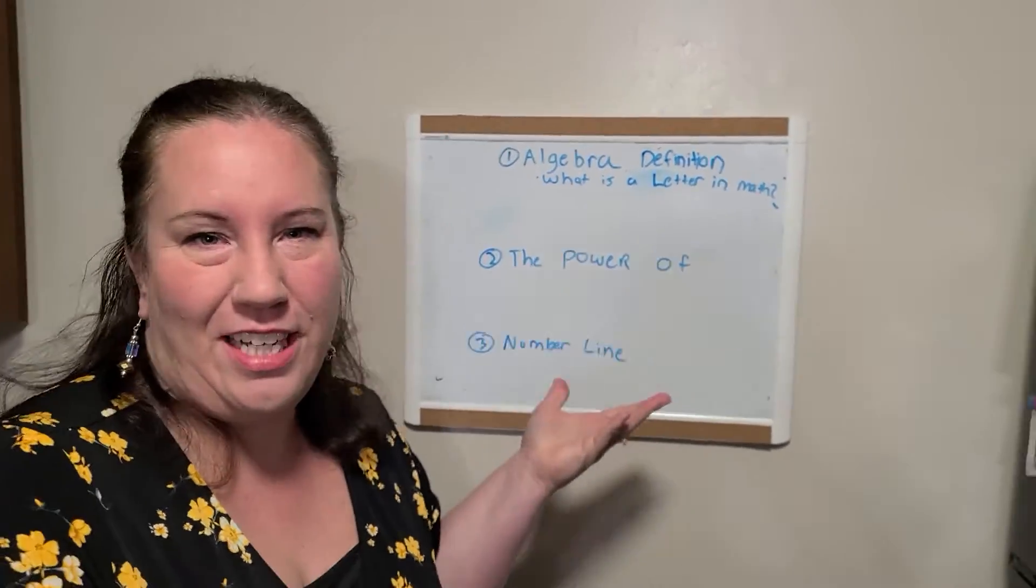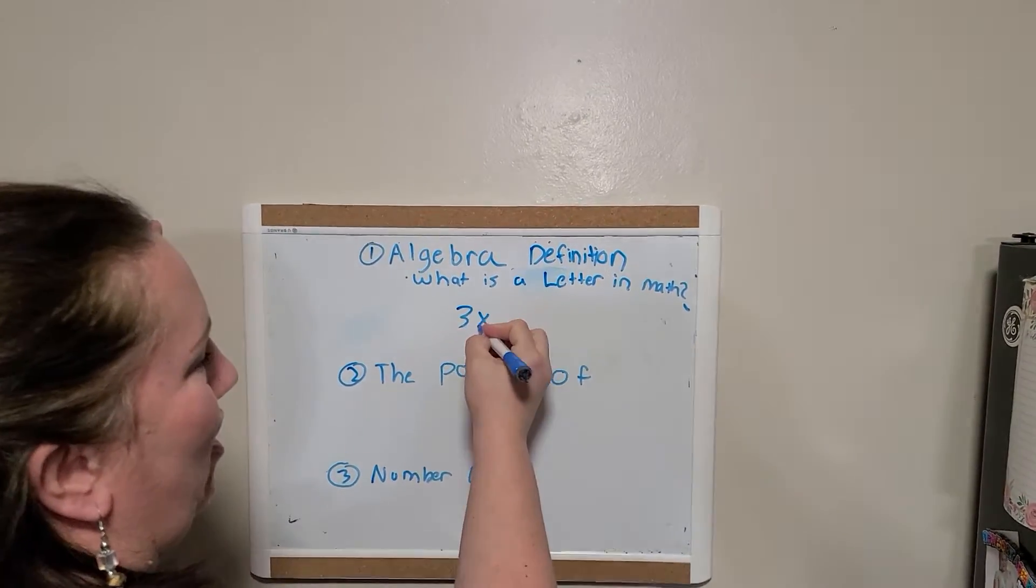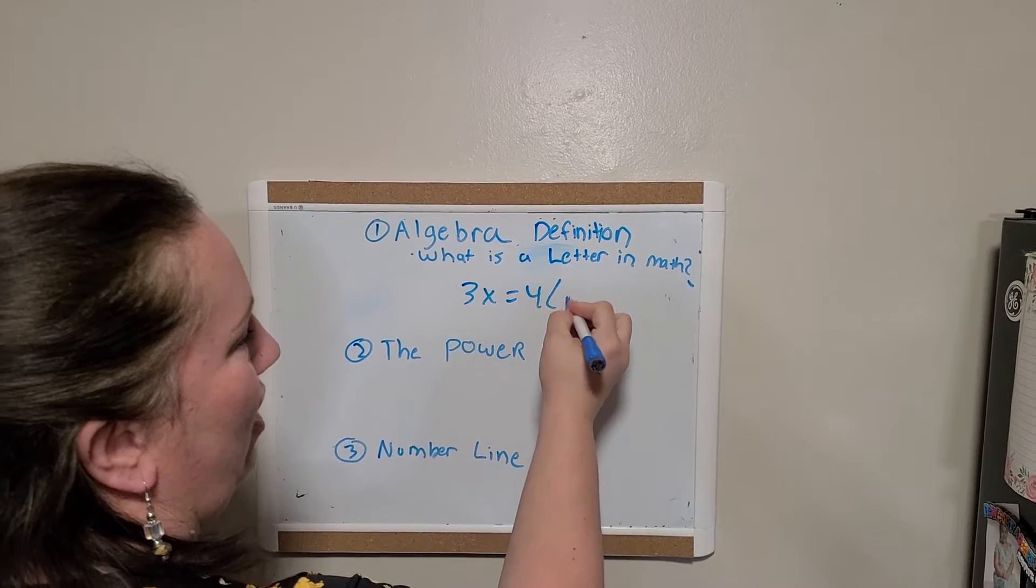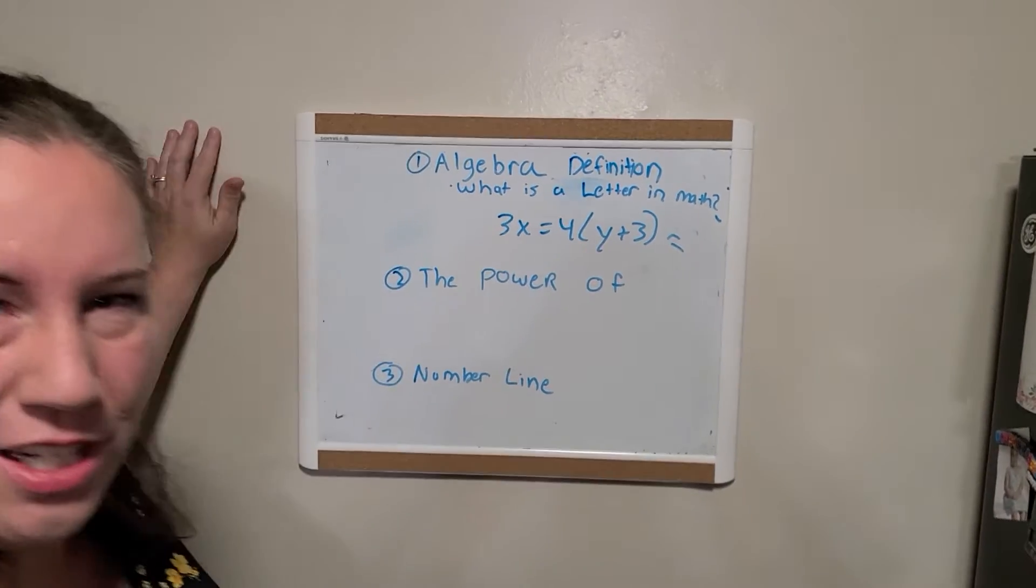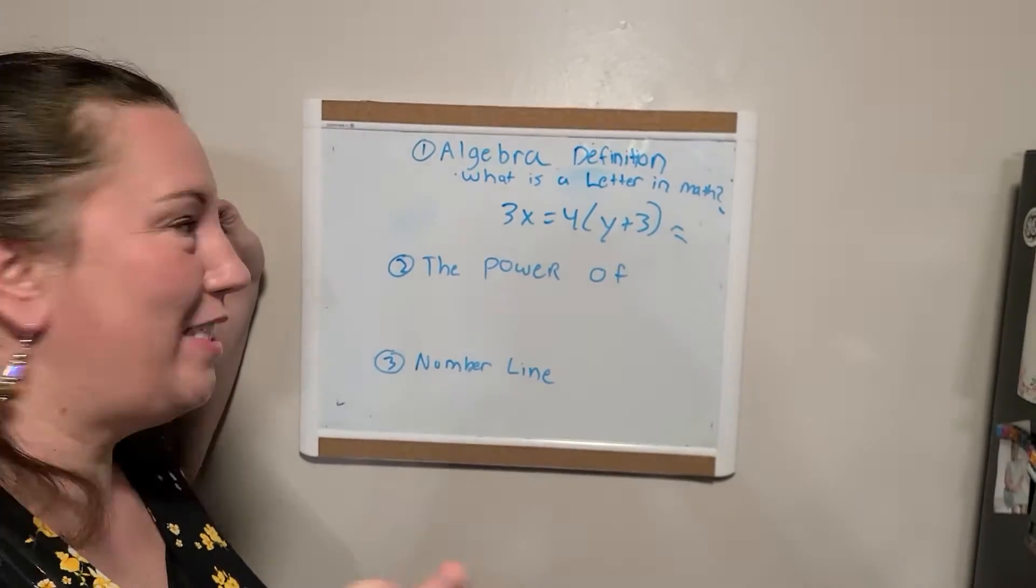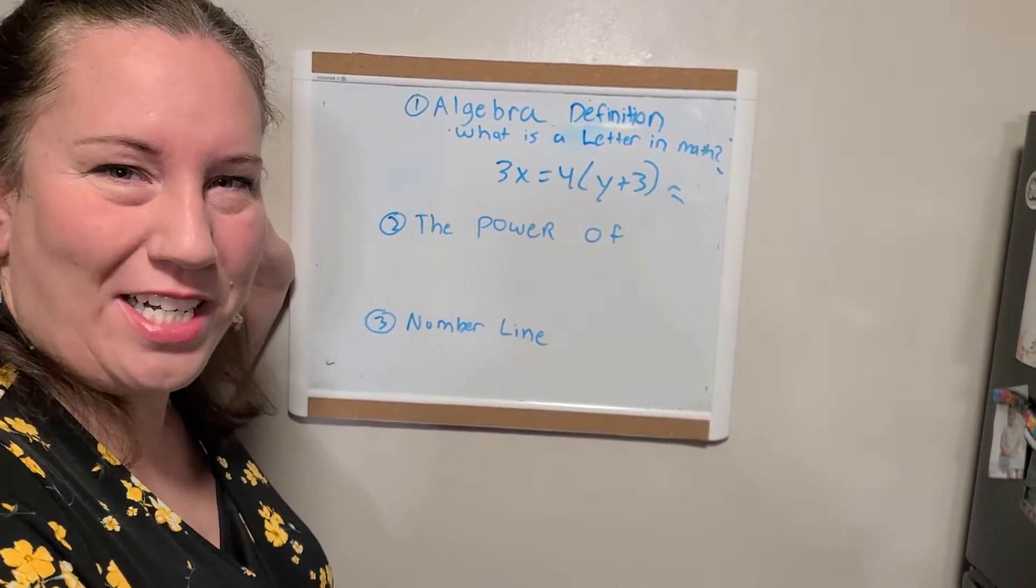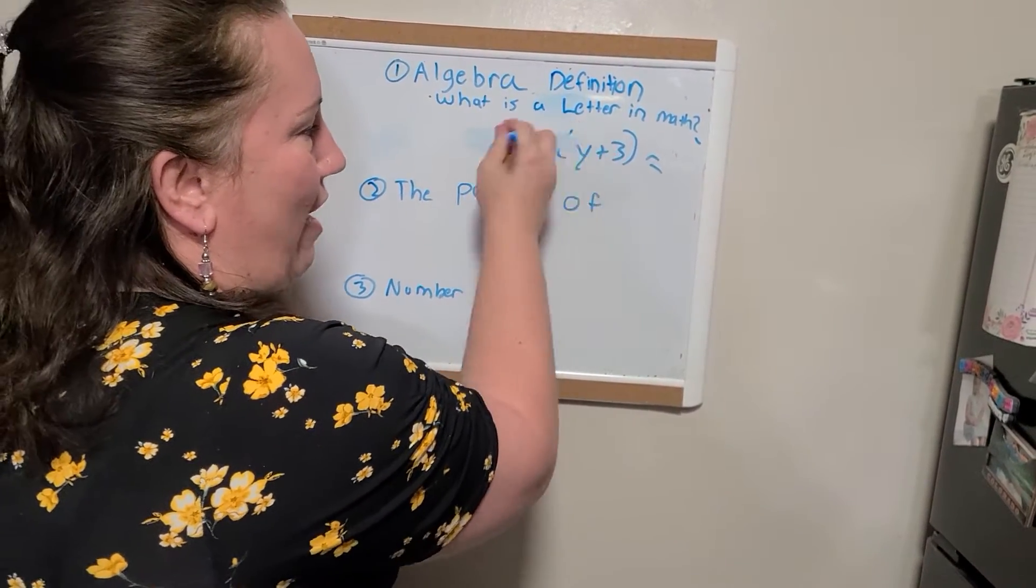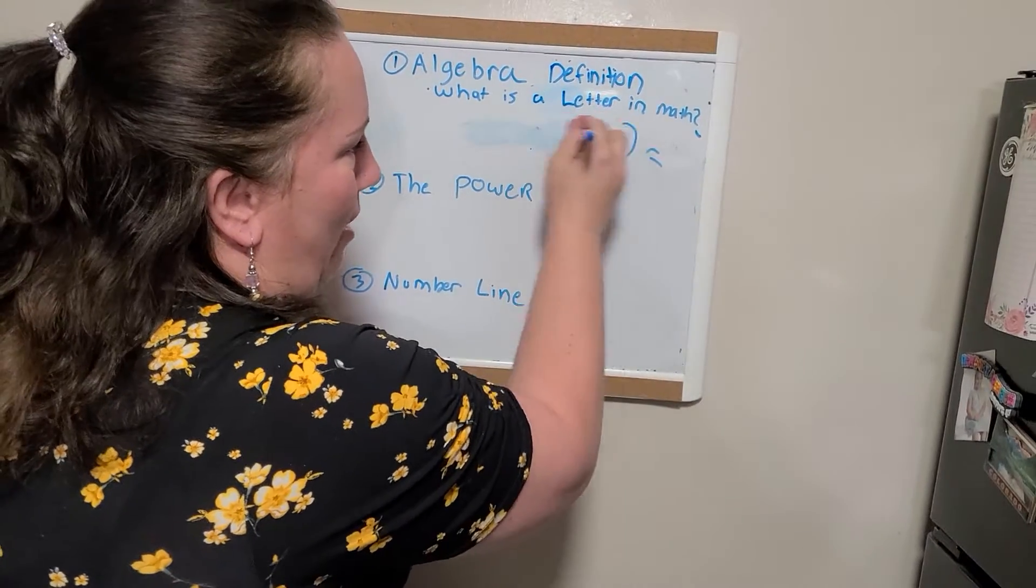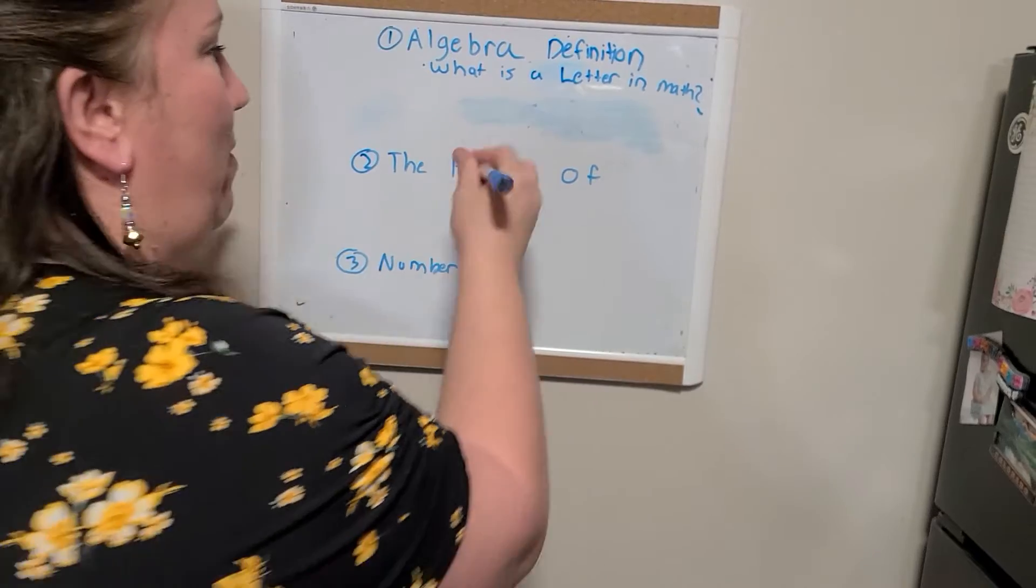So what is algebra? It just seems like it's weird, right? Because you see problems, and they're going to look like 3x equals 4y plus 3, and you're going to be like, what is that? Why in the world does this have letters in it? It's math, right? Why does it have letters? Well, there's a reason for those letters. Whenever you have a letter in a problem, I'm going to give you a super simple one first.